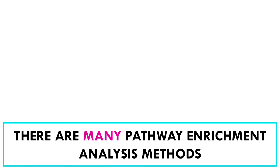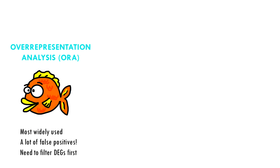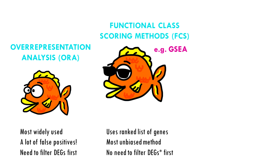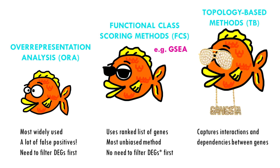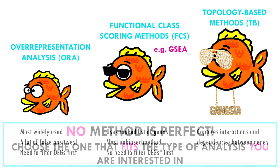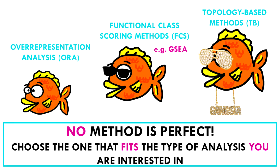So as you can see, gene set enrichment analysis has the advantage that you don't filter out your genes prior to the analysis, and it also takes into account how significant the changes are and in which direction they occur. To wrap up, there is a new generation of pathway enrichment analysis tools: topology-based methods, which also take into account dependencies and interactions between genes — but that is a story for another video.